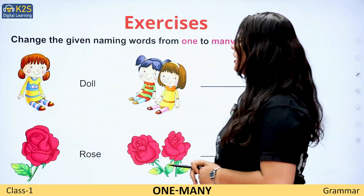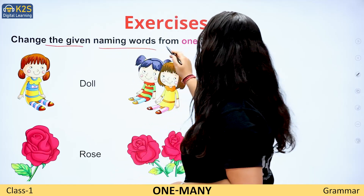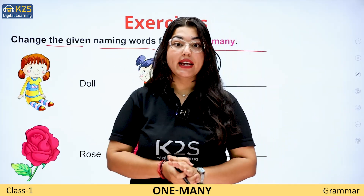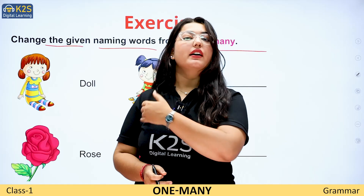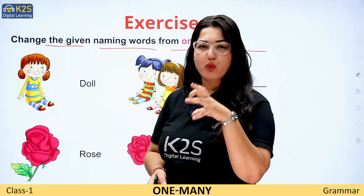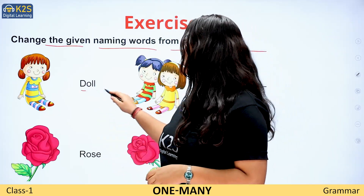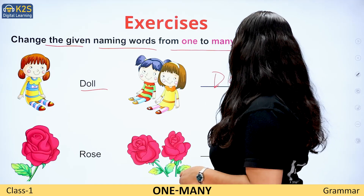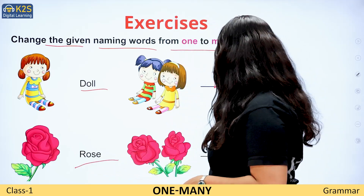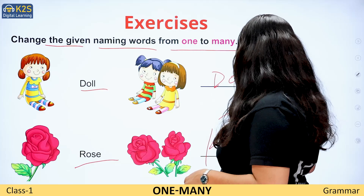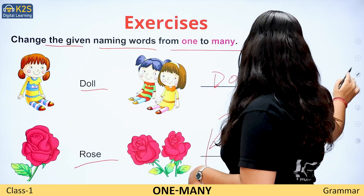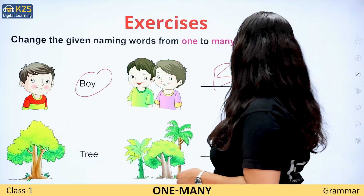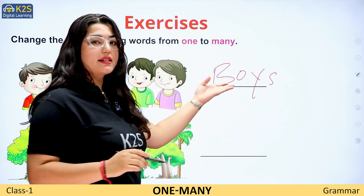Moving to the next part. Change the given naming word from one to many. Now, what do you have to do in this exercise? You have to change from one to many. Doll — dolls, I put S. Rose — roses. Boy — boys.